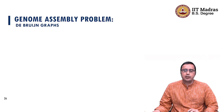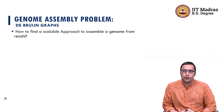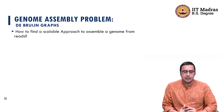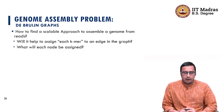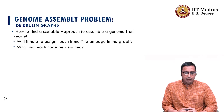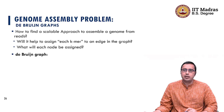We are going to introduce a new kind of graph called De Bruijn graphs, and we will see how we can use De Bruijn graphs to solve our problem. One of the major challenges we discussed is how to find a scalable approach to assemble a genome from reads. We have an approach, but it is not scalable. The question we are asking is: will it help to assign each K-mer to an edge in the graph, and what will each node be assigned if we construct such a graph?